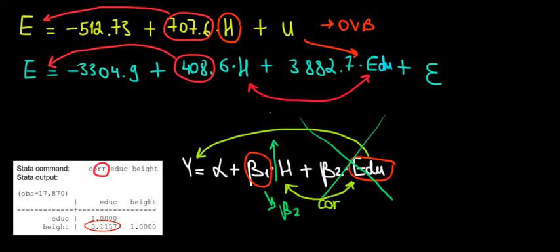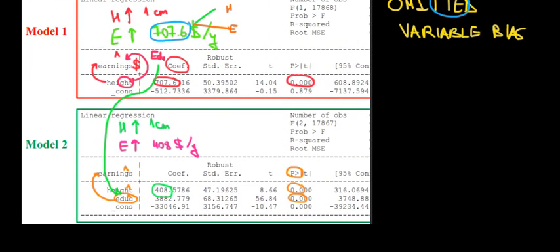And we also saw, based in our regression, over here in the output, that the effect of education, the second variable, on the dependent variable of earnings is significant. The p-value was 0.